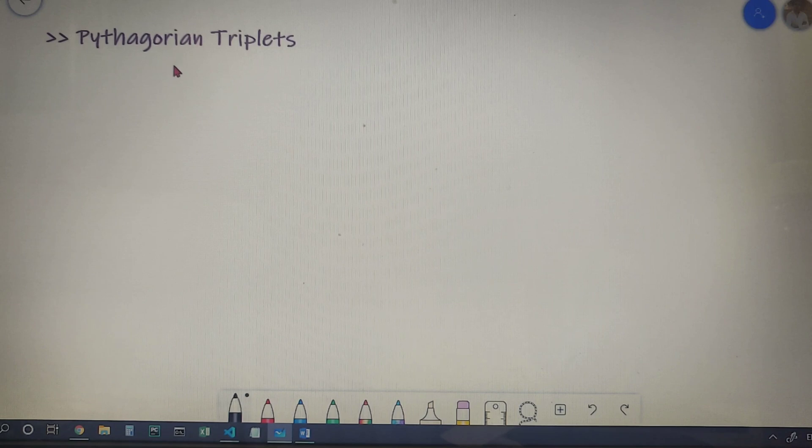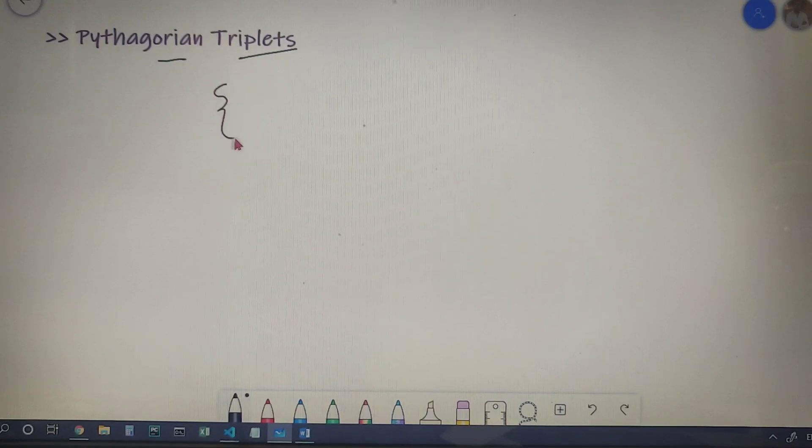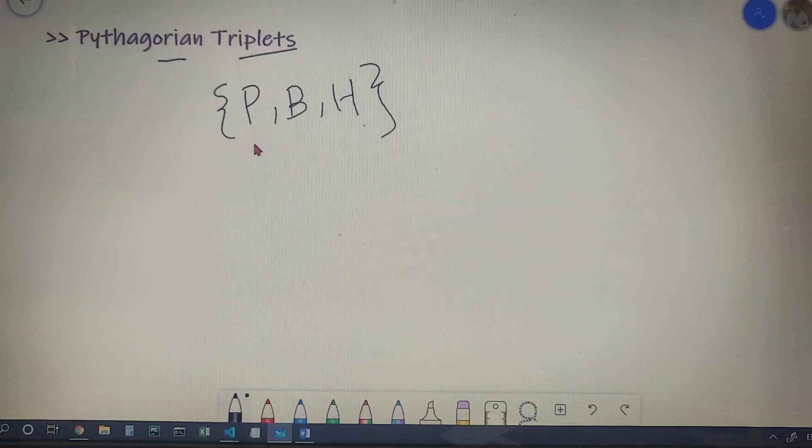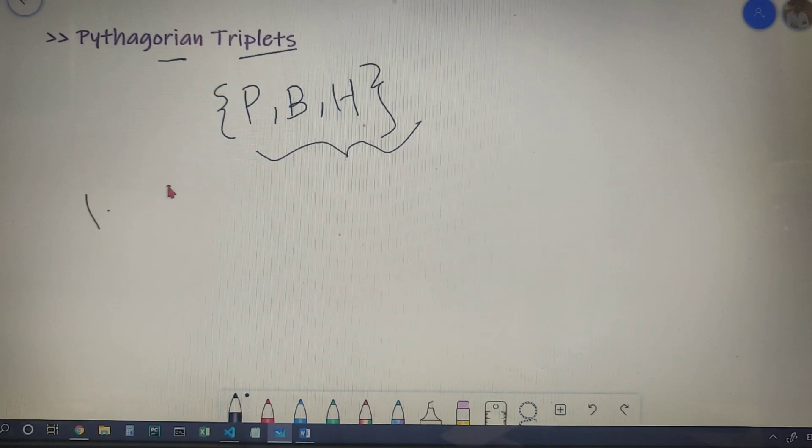Moving on to our next part, we have Pythagorean triplets. Let me explain to you what are Pythagorean triplets. The three sides P, B, and H, when they follow the Pythagoras theorem, they are called as Pythagorean triplets. Let's take some examples.